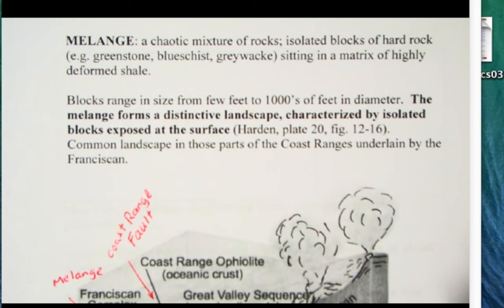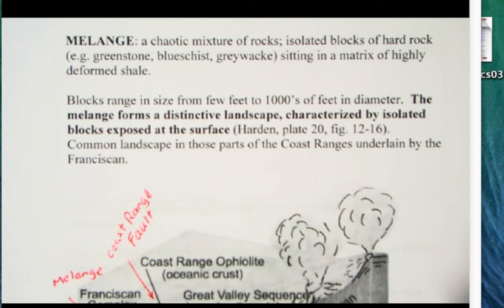Isolated blocks of hard rock - the greenstone, the blue schist, the graywacke, the limestone, the chert - they're all sitting in a matrix of highly deformed shale. The book even says they're floating in this matrix of shale.